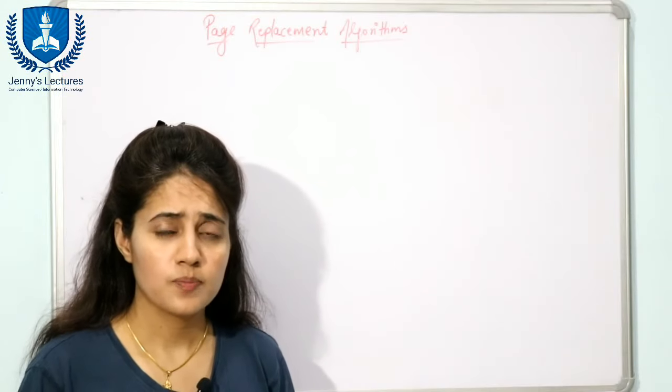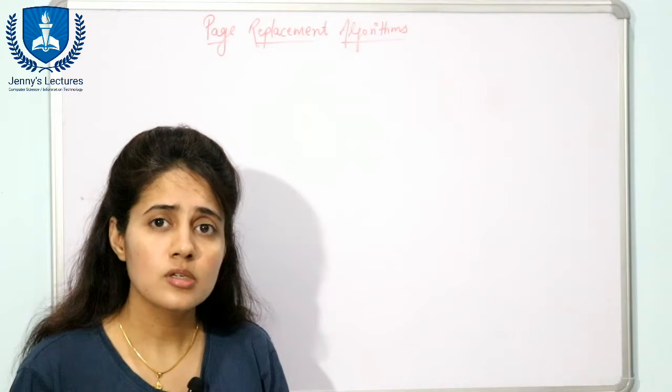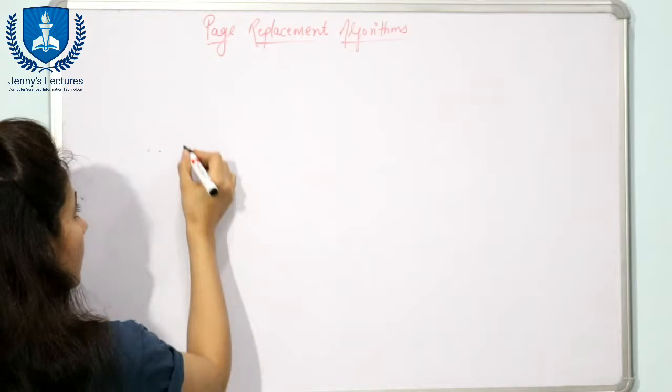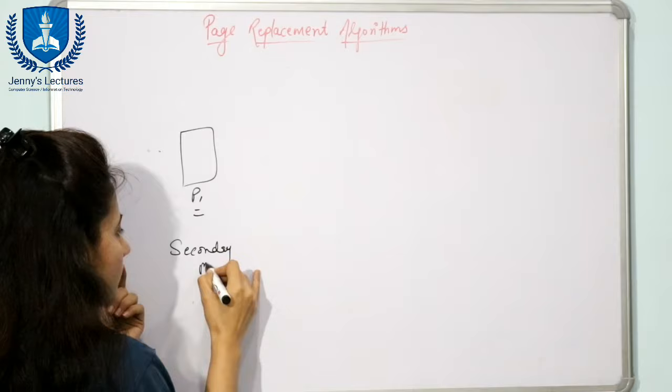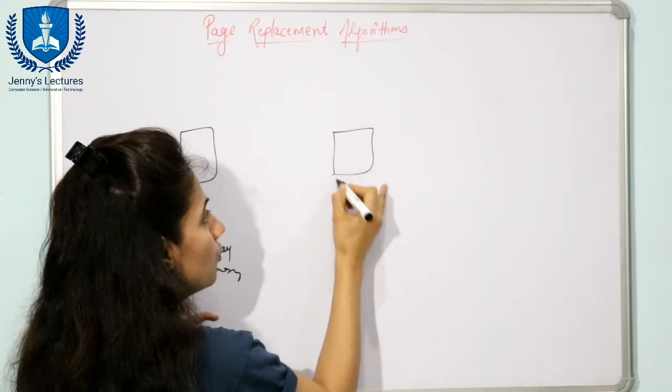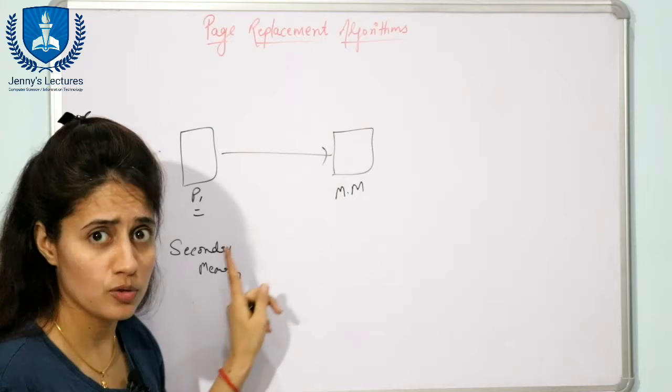An important thing you should know is that for execution of a process, that process has to be in main memory. If a process P1 is in secondary memory and the CPU wants to execute it, then this process has to be loaded into main memory first. That is the simple rule; otherwise, this process cannot be executed.